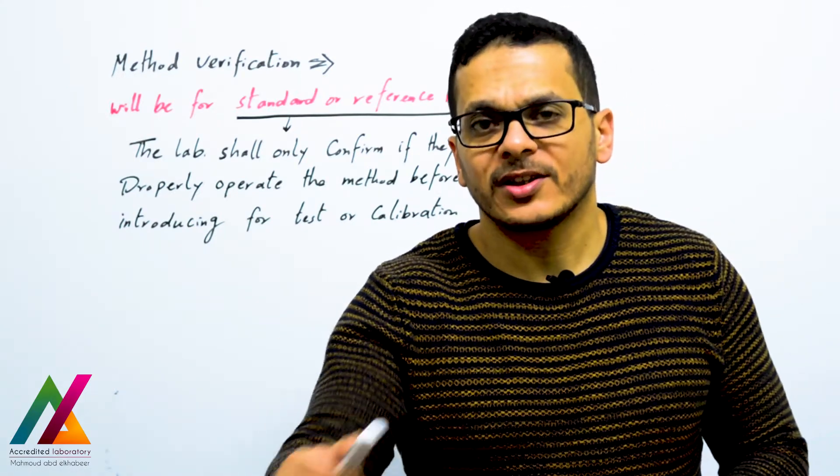If you made a minor change to the reference method, you don't need full validation — you just need to make verification. This is because a reference method has already been validated by a group of laboratories who carried out the validation before it was published as a standard. So it's already validated, and you just need to evaluate some performance parameters.